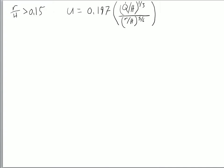Hello everyone. This video is going to show how to rearrange Alpert's correlation for velocity at a point if the r over h value is greater than 0.15.